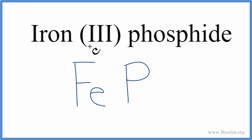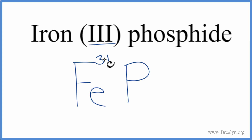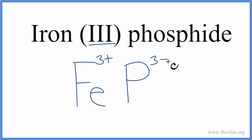Iron tells us right here with this Roman numeral 3 — iron is a transition metal, and the Roman numeral 3 indicates an ionic charge of 3+. If you look up phosphorus on the periodic table, its ionic charge is 3−.